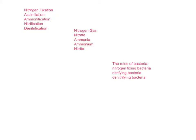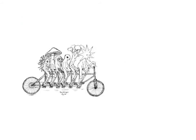It might be a good idea to go back and look at this screencast in segments, or look at the diagram in your book, and make sure that you understand the processes of nitrogen fixation, assimilation, ammonification, nitrification, and denitrification. Make sure you know where nitrogen gas, nitrate, ammonia, ammonium, and nitrite come into play — and of course you should know the formulas for those. Also make sure that you know the roles of bacteria in the nitrogen cycle. Bacteria play huge roles — know the role of nitrogen-fixing bacteria, nitrifying bacteria, and denitrifying bacteria. I hope you found this tutorial of the nitrogen cycle helpful.